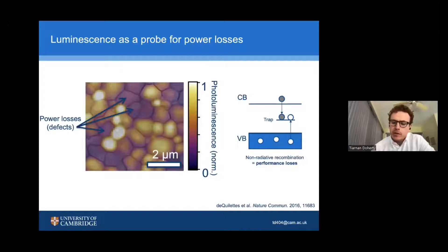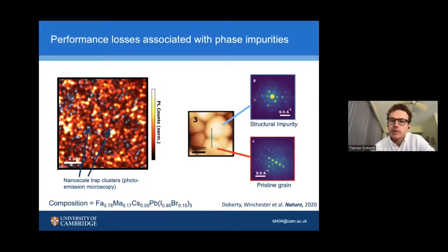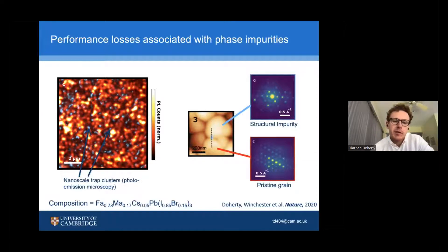Understanding where these trap states come from was the focus of my early PhD work. I really wanted to understand the structural landscape around these trap states. The key finding is that where traps form, they tend to form in clusters, and these clusters tend to be associated with unexpected phase impurities — specifically nanoscale structural variations we don't expect to be present, and in particular hexagonal phase impurities. This was surprising because we can't see these hexagonal phase impurities with many of the macroscale techniques used to characterize these materials, but we could see them with our nanoprobes of structure.